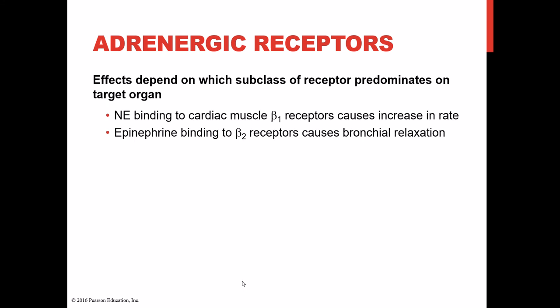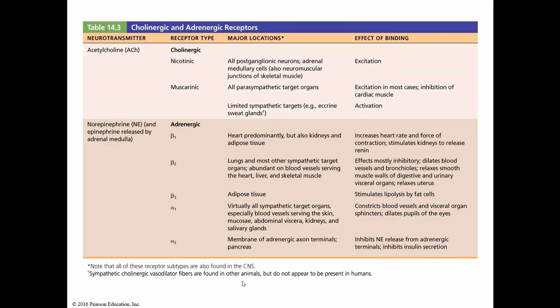For adrenergic receptors — alpha and beta — the effect depends on which subclass is more prevalent on the target organ: beta-1, beta-2, alpha-1, or alpha-2. For instance, norepinephrine binding to beta-1 receptors on cardiac muscle causes an increase in heart rate, while epinephrine binding to beta-2 receptors causes a relaxation or slowing effect. Adrenergic fibers can therefore be either excitatory or inhibitory. Your textbook has a table listing each receptor type, its major locations, and the effect of the neurotransmitter when it binds.